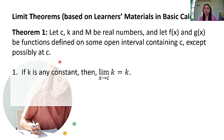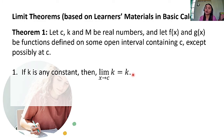The first theorem: if K is any constant, then the limit of K as X approaches C is equal to K. In other words, the limit of the constant is just equal to the constant itself.